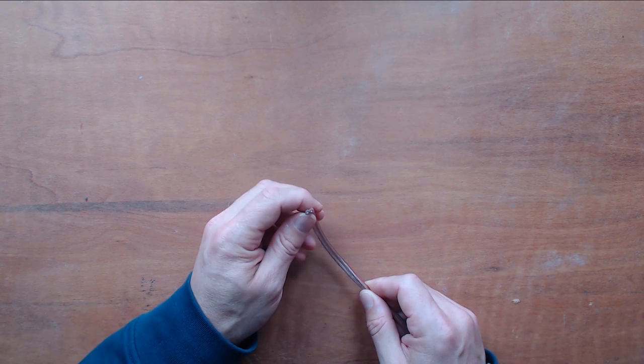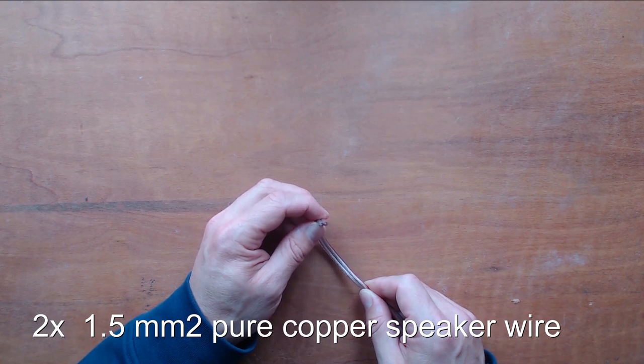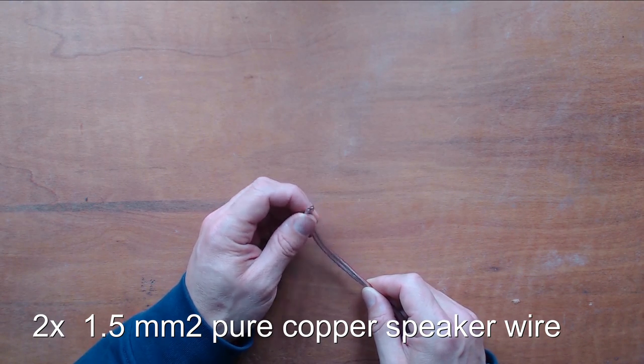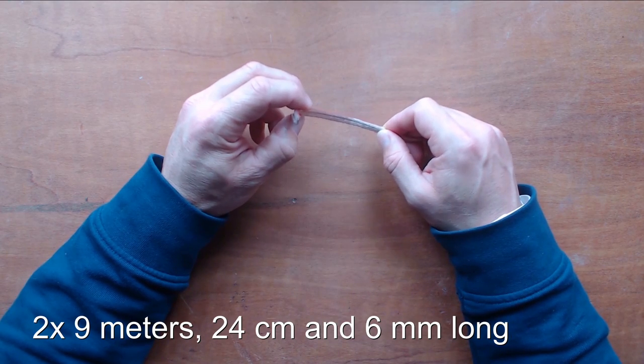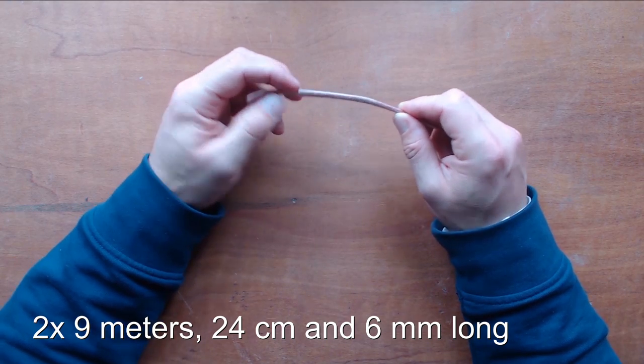This wire is 1.5 square millimeters. It's made of pure copper with a PVC coating. So this is 9 meters, 24 centimeters, and 6 millimeters long.